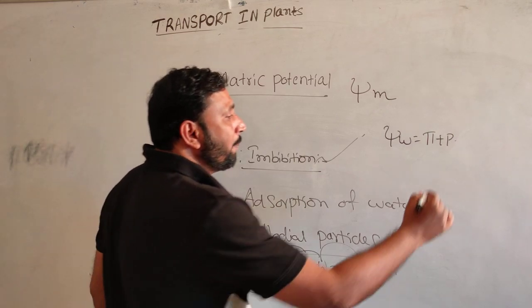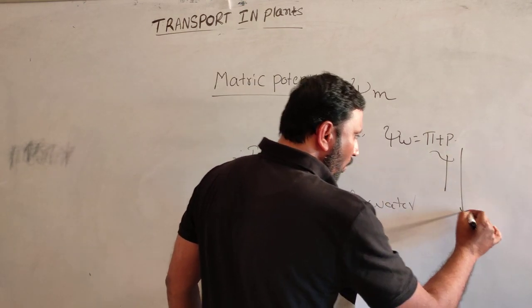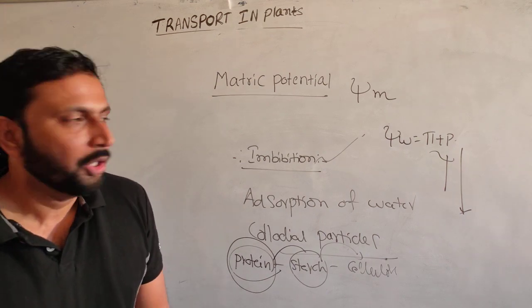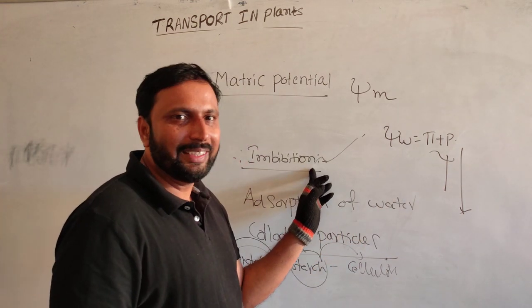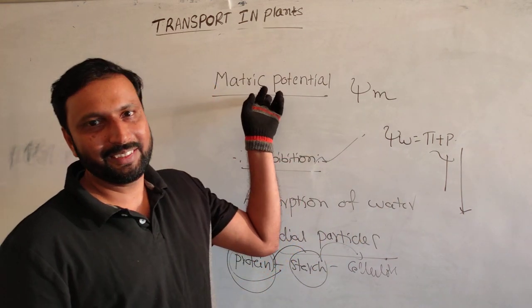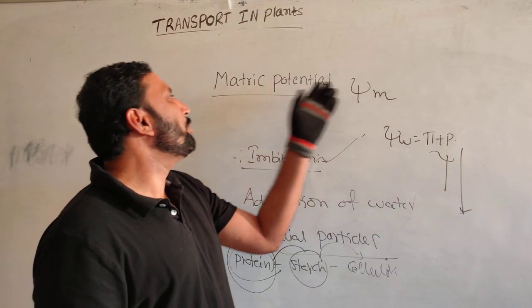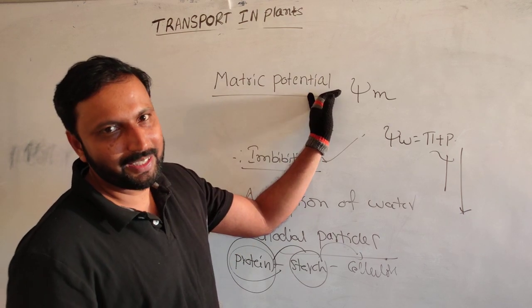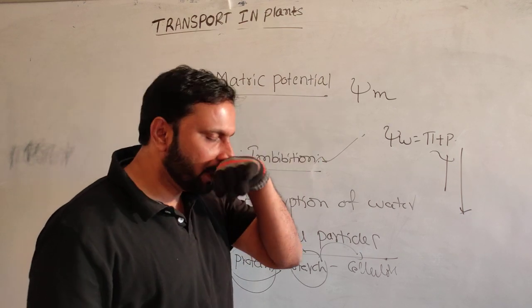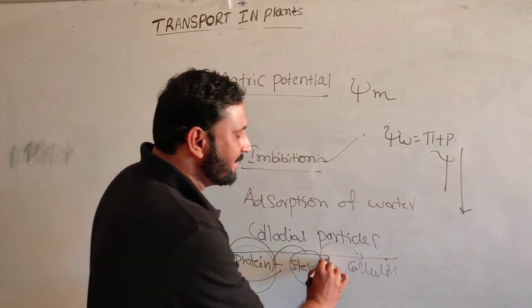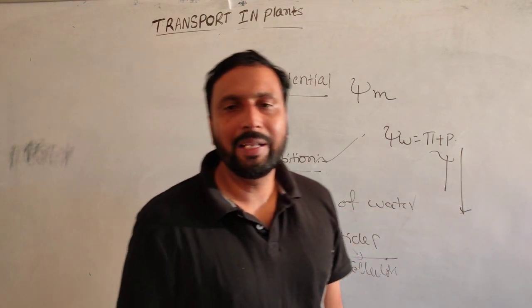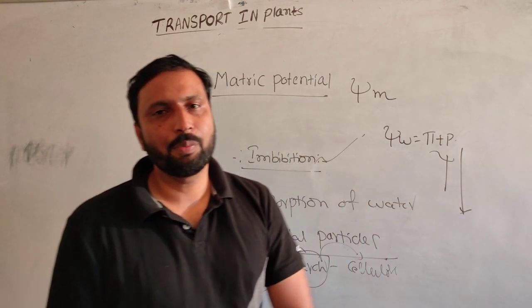So water potential is decreasing. Water potential decreasing due to imbibition is called matric potential. Decreasing the water potential due to matric forces is called matric potential. But this matric potential is only seen in dry seeds, so that is why it is negligible. This is matric potential.